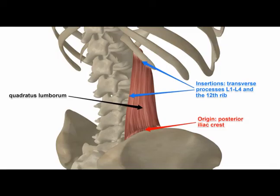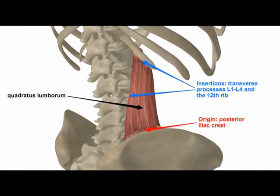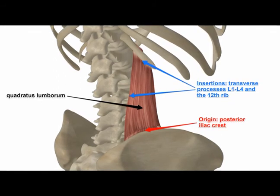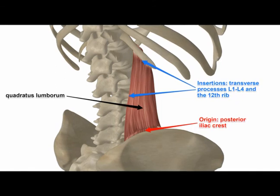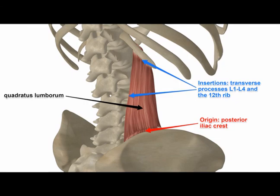The quadratus lumborum muscles reside in the deep posterior, lateral, and inferior areas of the spine, involving the iliac crest, transverse processes of the lumbar vertebrae, and the 12th rib.